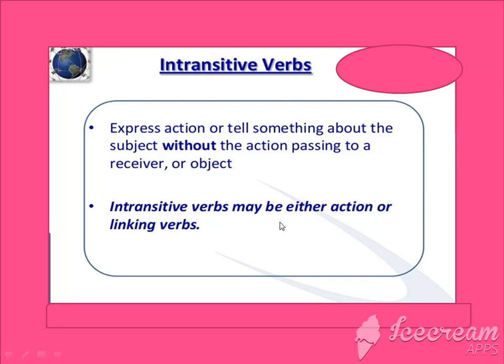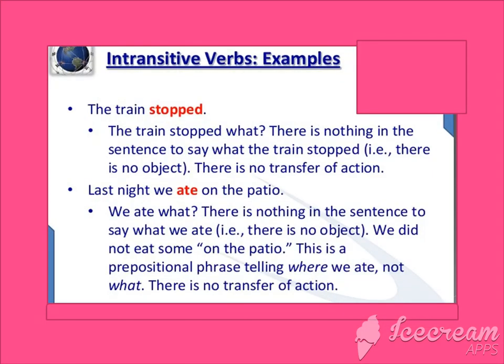Intransitive verbs may be either action or linking verbs — there are two situations for intransitive verbs. For example: 'The train stopped.' The train stopped what? There is no reason, nothing to explain the stop, no object, no transfer of action. That is why the verb 'stop' is an intransitive verb.